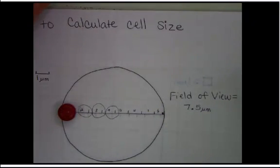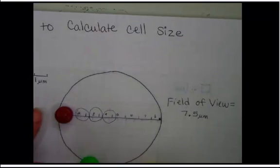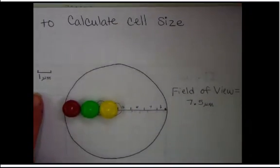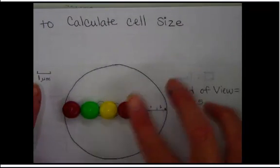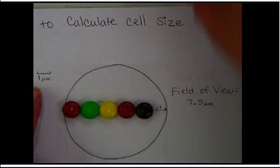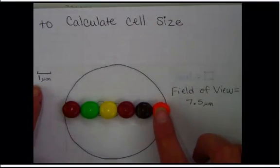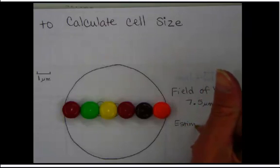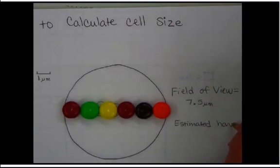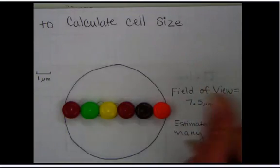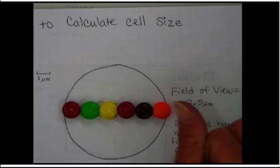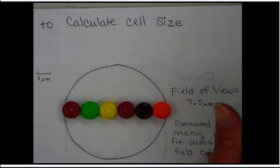Or in my case, I've got some extra M&Ms. So I'm going to use my manipulatives and line my M&Ms side by side across the diameter until I'm at the edge. And in this case, it looks like I have estimated how many M&Ms fit across my field of view.